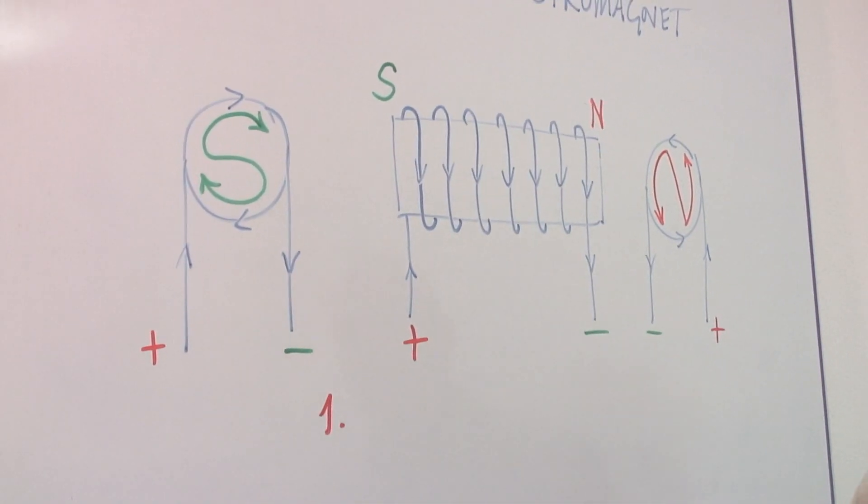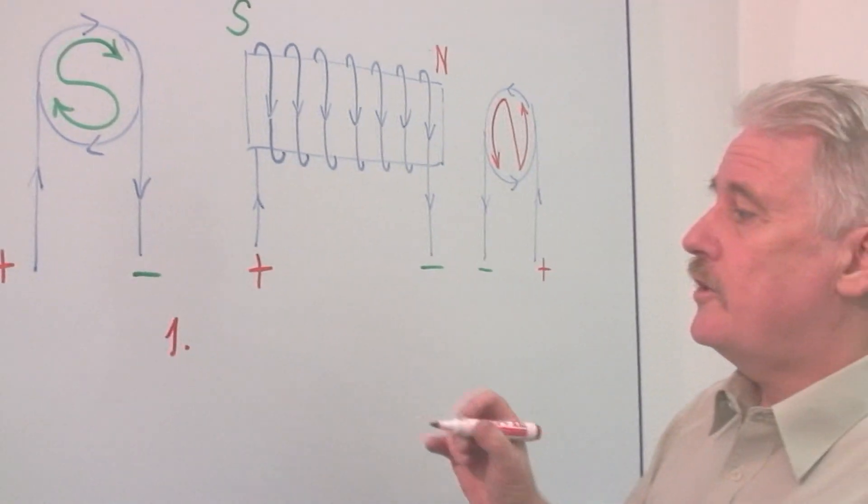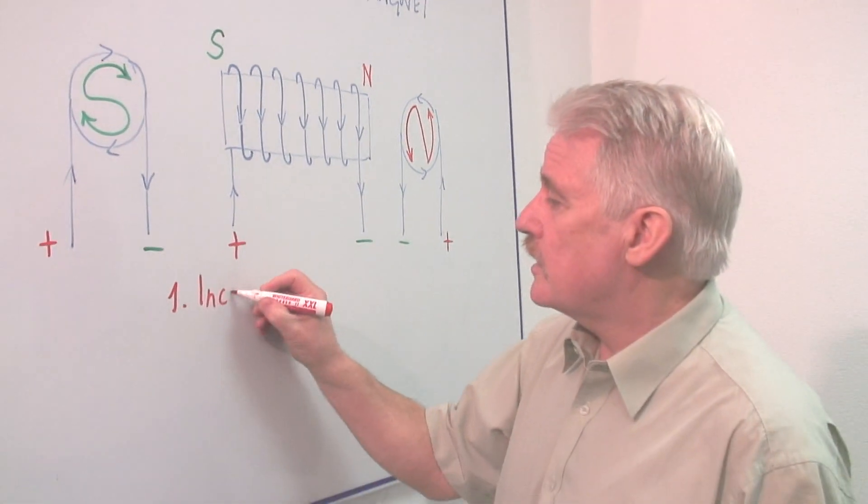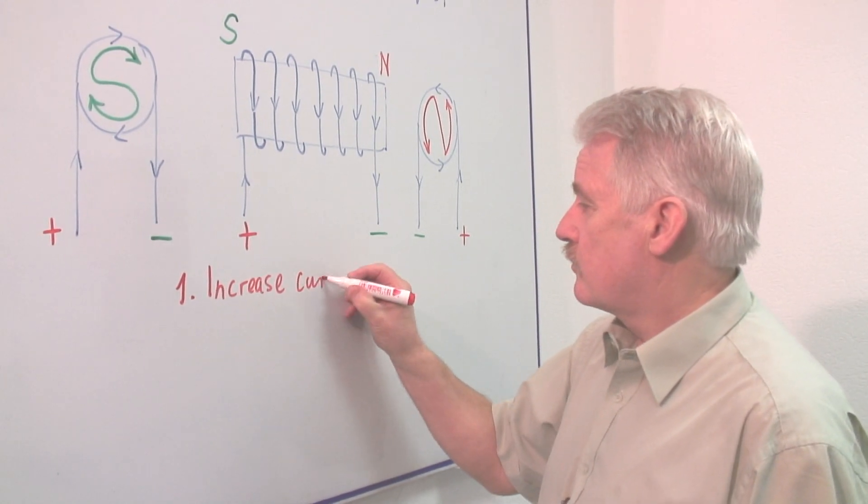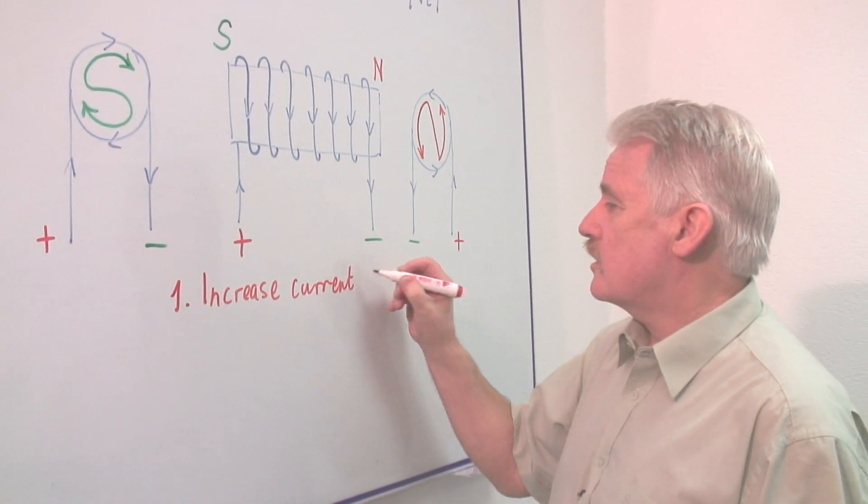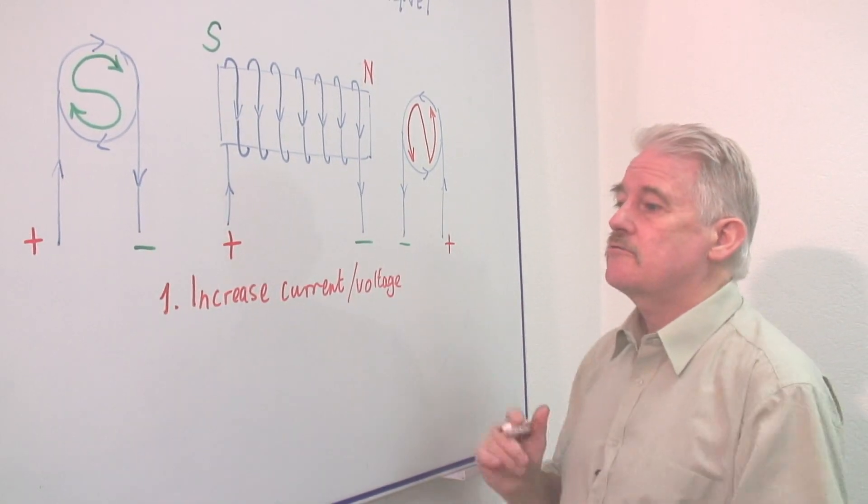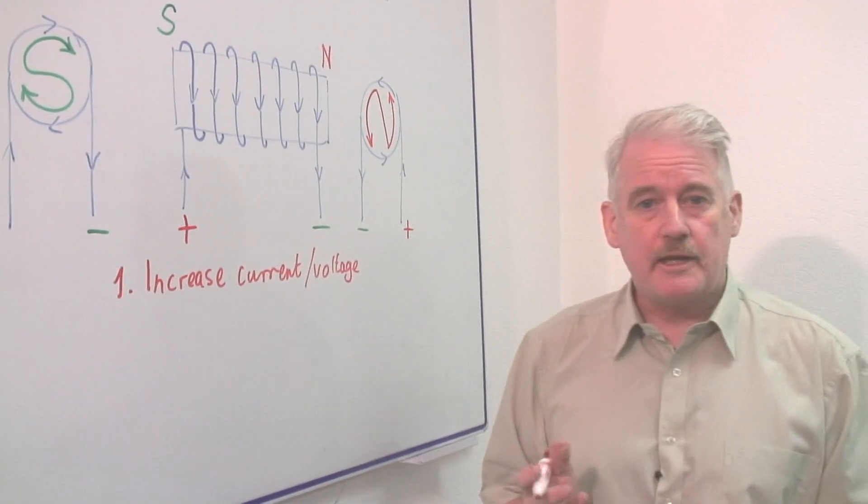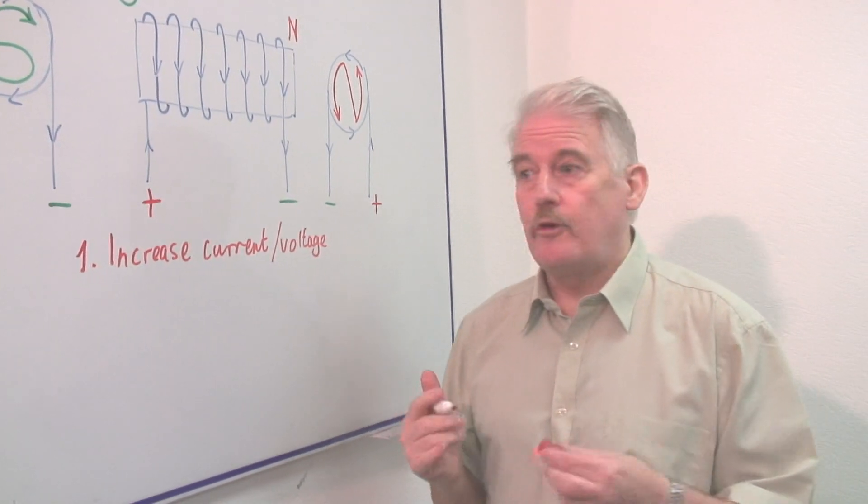Let's go and look at the first one. The first one is fairly obvious: to increase the current through the wire. If you increase the current, and you can do that by increasing the voltage, you will increase the strength of the magnet automatically. If you double the current, you will actually increase the magnetism fourfold.